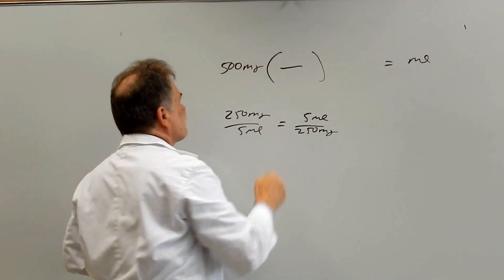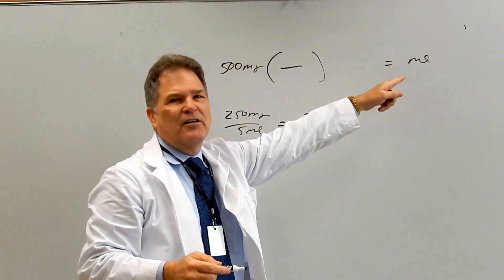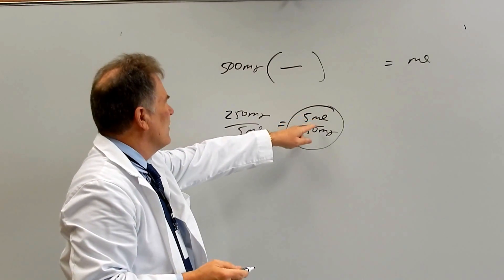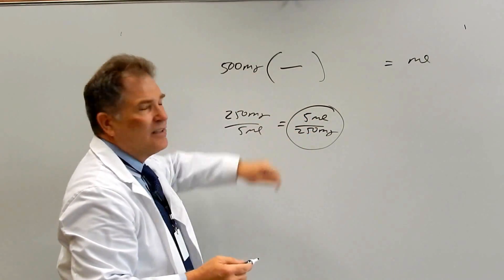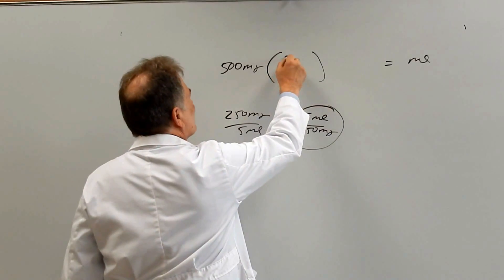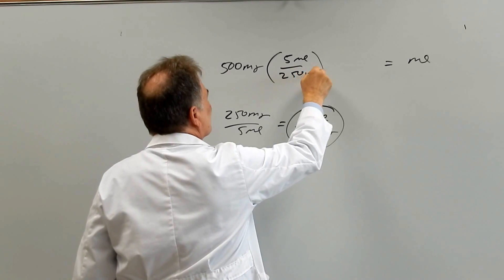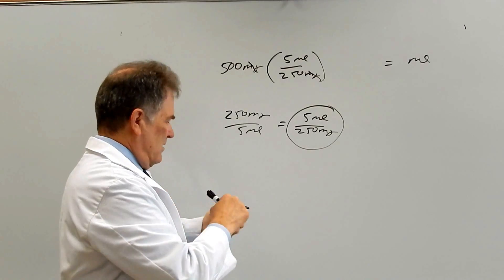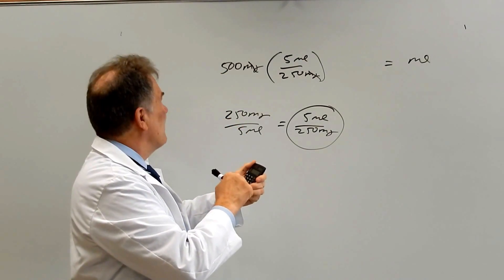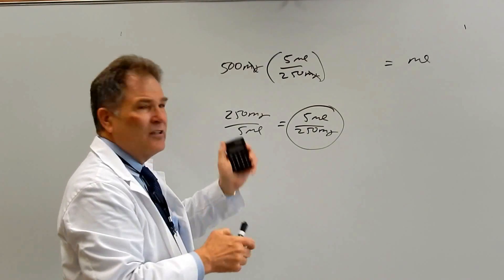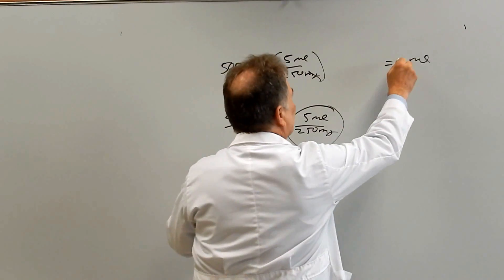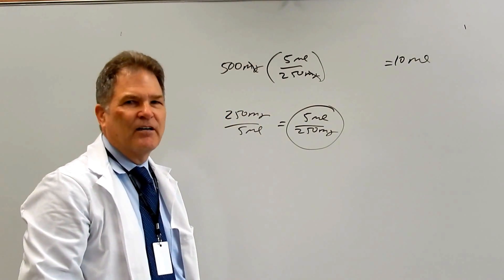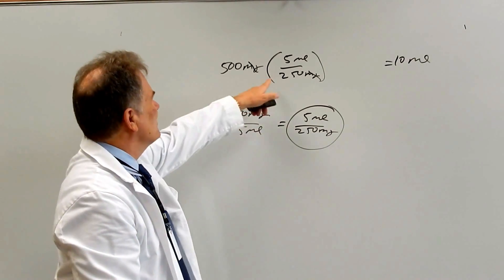We need to change milligrams into mls, so we pick the ratio that has ml on top and milligrams on the bottom to cancel out those milligrams — that's 5 mls over 250 milligrams. Take out your calculator and put in 500 times 5 divided by 250, and that gives us 10 mls as our answer.